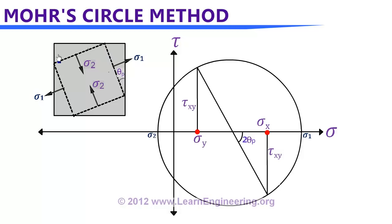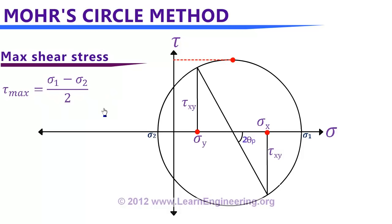For the second requirement — maximum shear stress value — you can easily note from the Mohr circle that maximum shear stress occurs at the topmost point of the circle. The value of this maximum shear stress is equal to the radius of the Mohr circle, which can be expressed as (sigma_1 minus sigma_2) divided by 2.